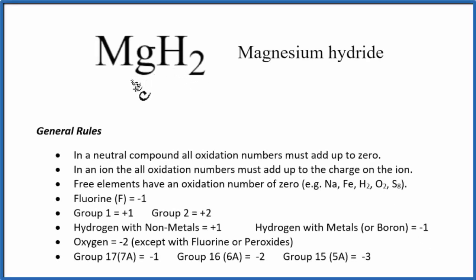To find the oxidation numbers for each element in MgH2, magnesium hydride, we'll use these rules here. So magnesium hydride, that's a neutral compound because there's no plus or minus charge like you see written with ions. Since it's neutral, the oxidation numbers all add up to zero, so that's important.